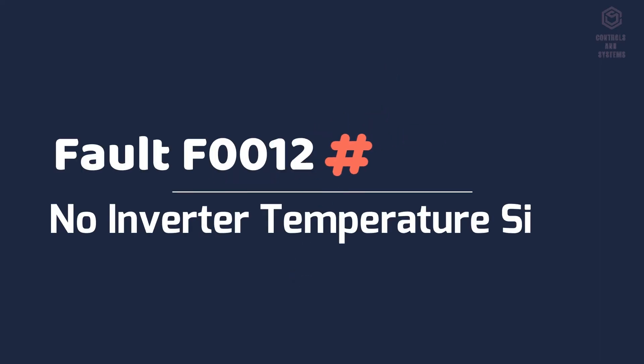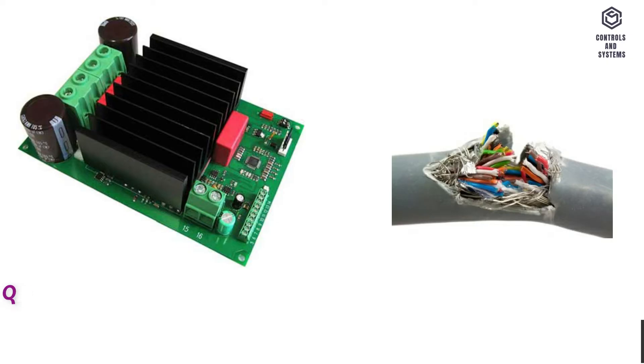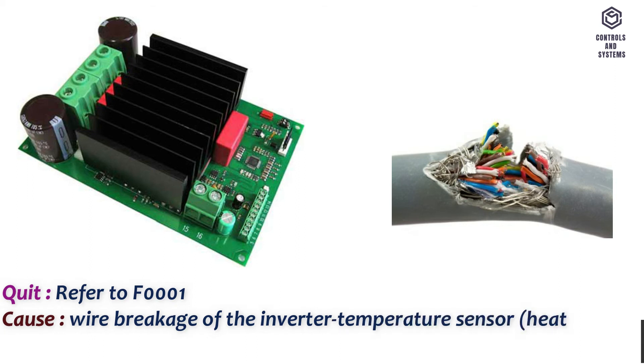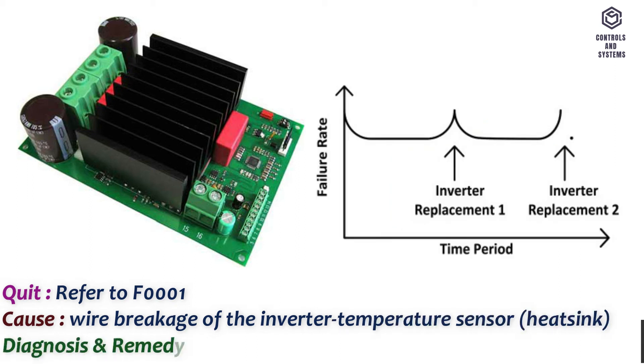Fault F0012 no inverter temperature signal. Quit: Refer to F0001. Cause: Wire breakage of the inverter temperature sensor heat sink. Diagnosis and remedy: Replace the inverter.